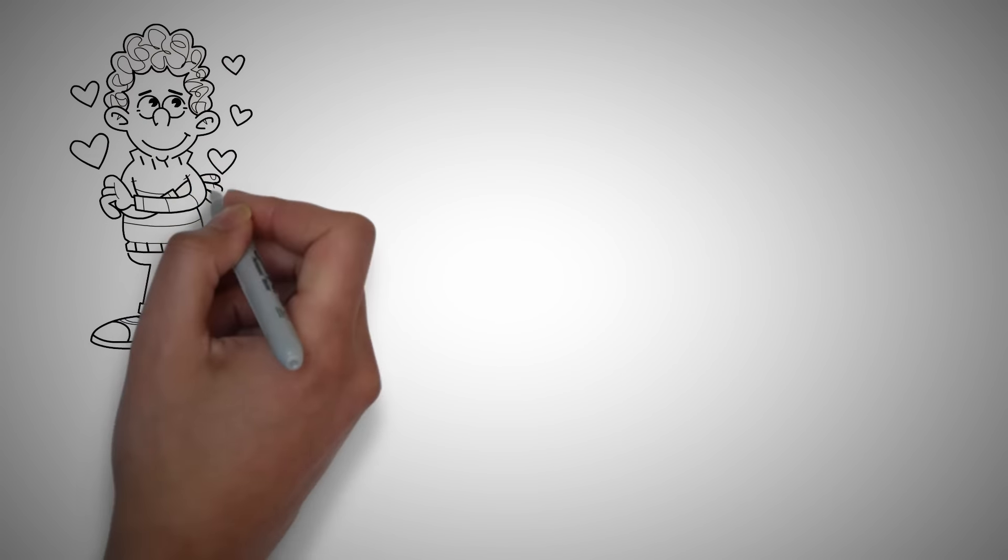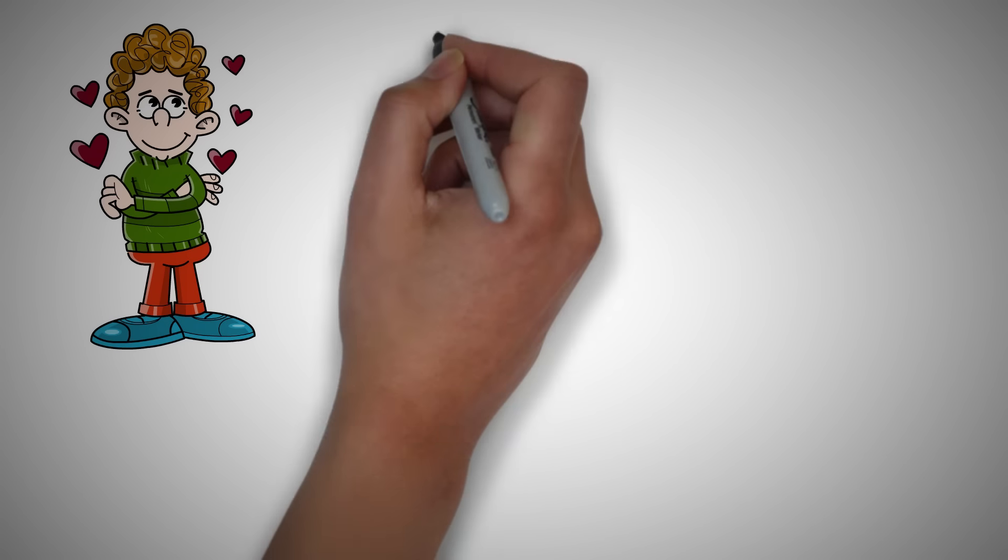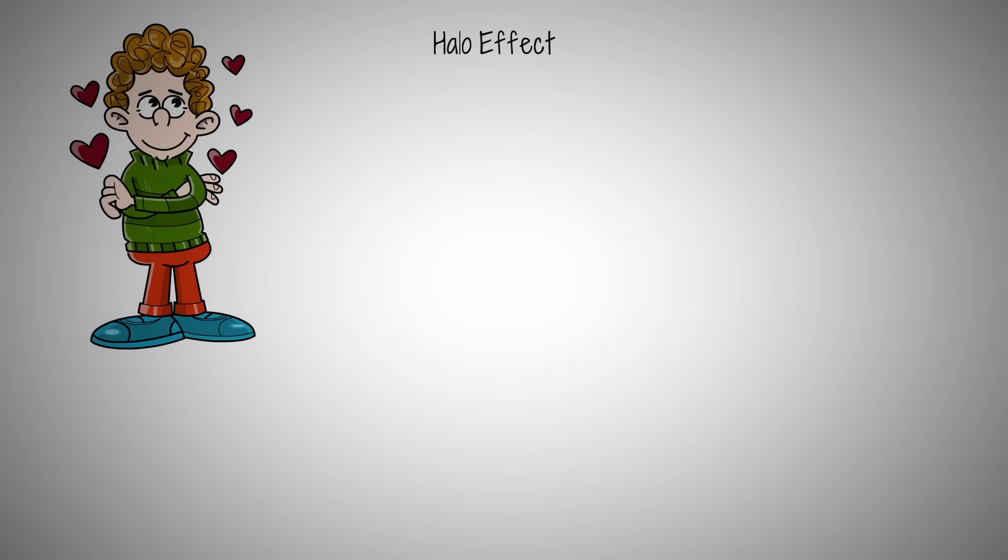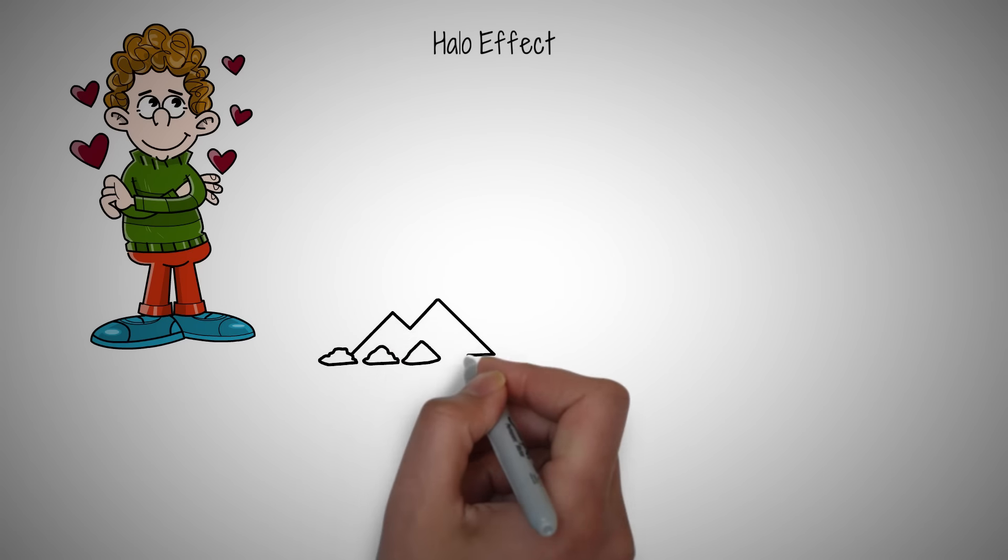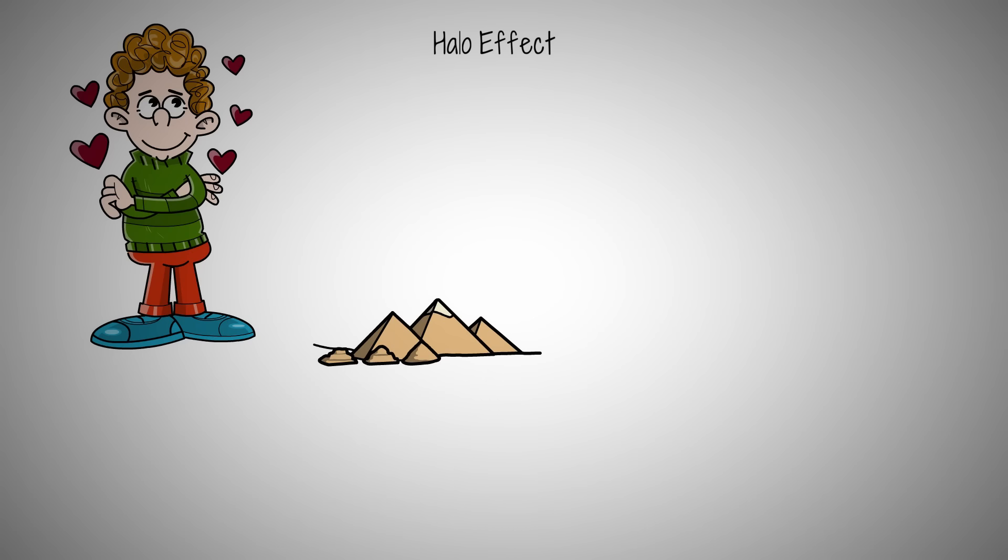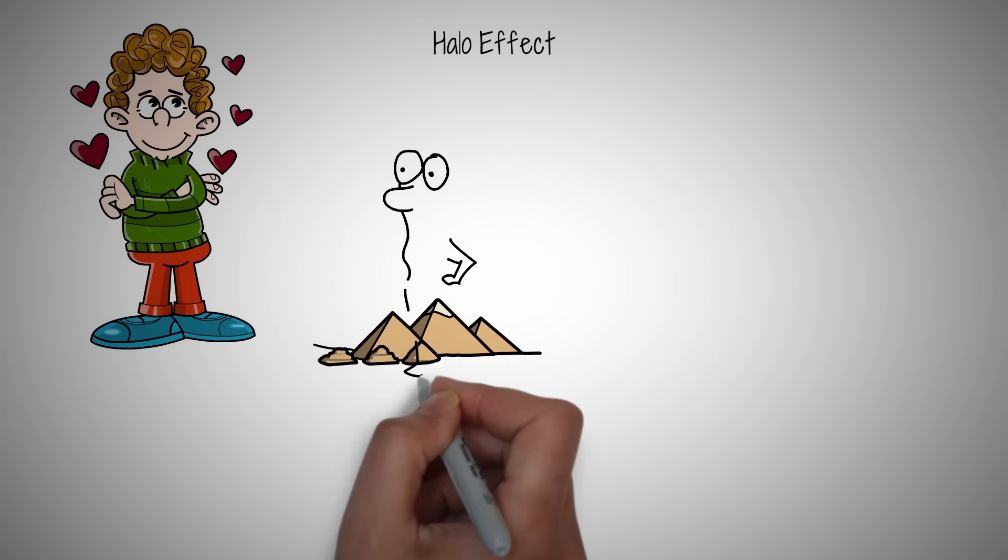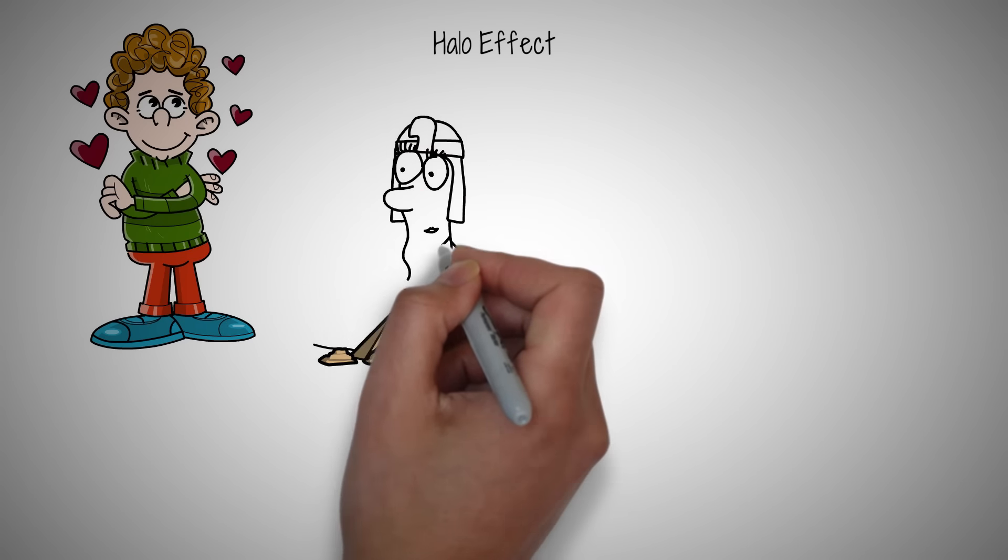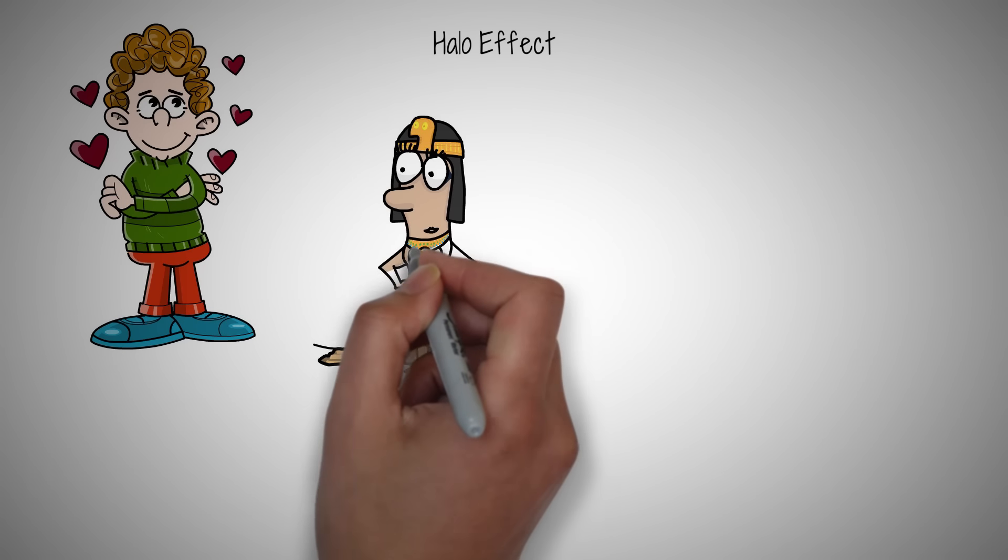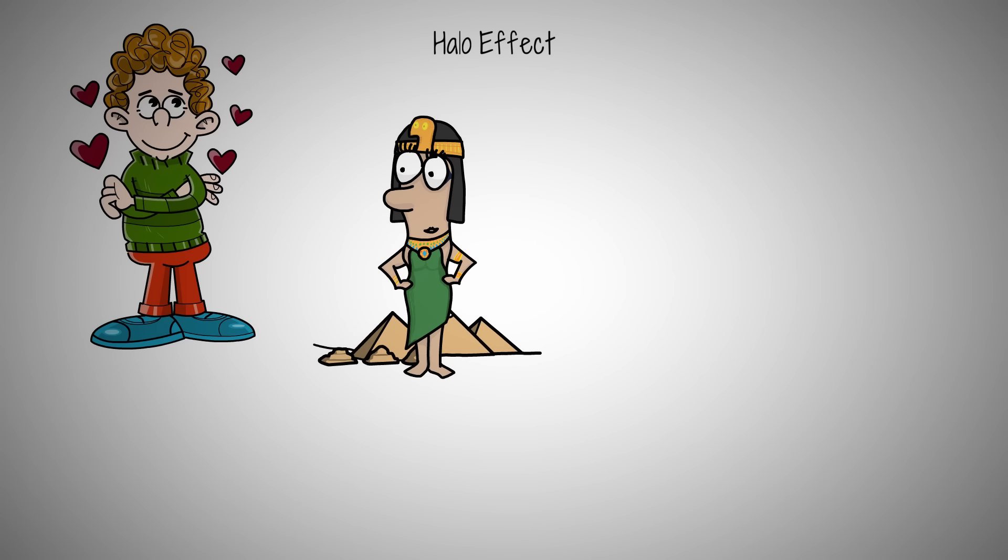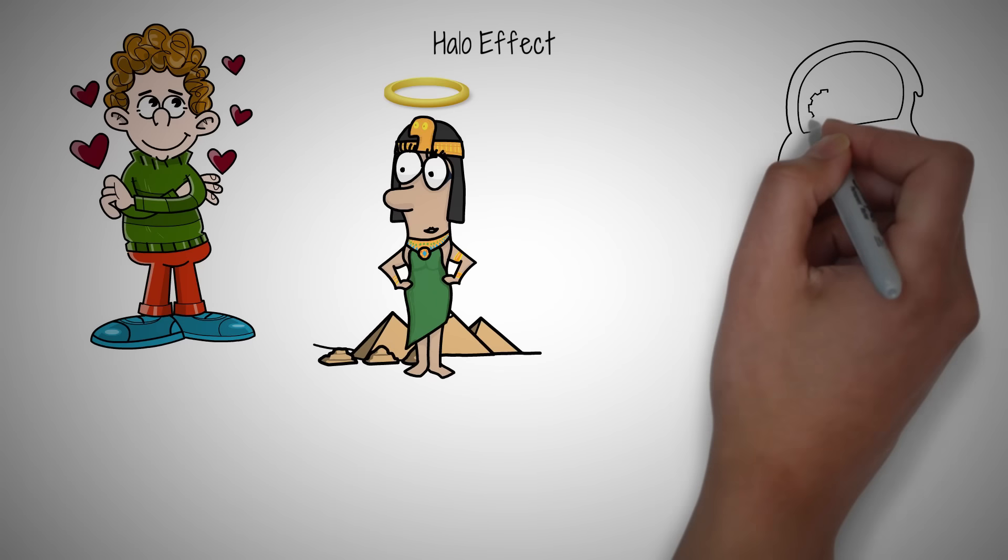Ever wondered why we instantly like someone based on one trait? This is called the halo effect, a phenomenon that affects our judgment without us even realizing. Think about Cleopatra, the last pharaoh of Egypt. Known for her stunning beauty and charm, these traits cast a halo that influenced how people perceived her intelligence, leadership, and political skill. It shaped her legacy and helped to navigate her reign in a male-dominated era.